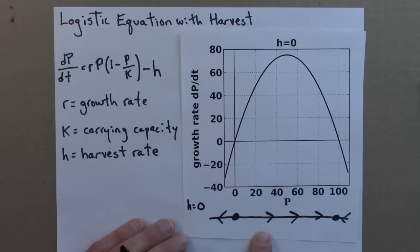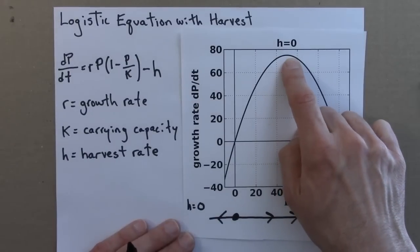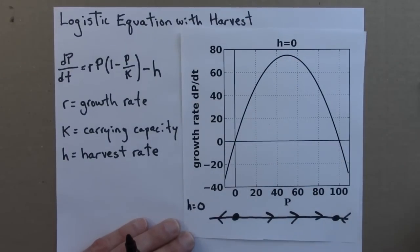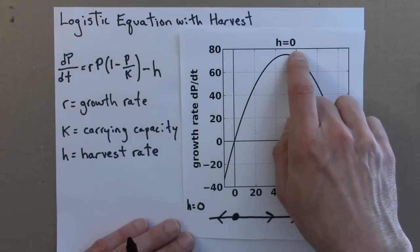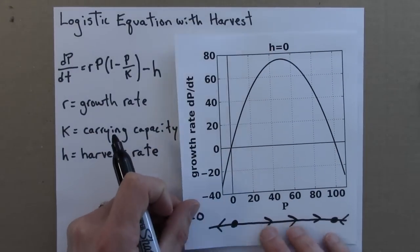So this is just what we did in the last video. Stable fixed point at 100, unstable fixed point at 0. And this is the case where we aren't harvesting any fish at all. Alright. So now we've analyzed it for h equals 0. I'm going to do the same thing, but for a different value of h.